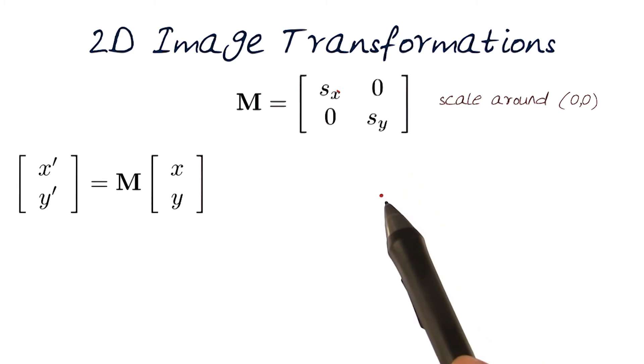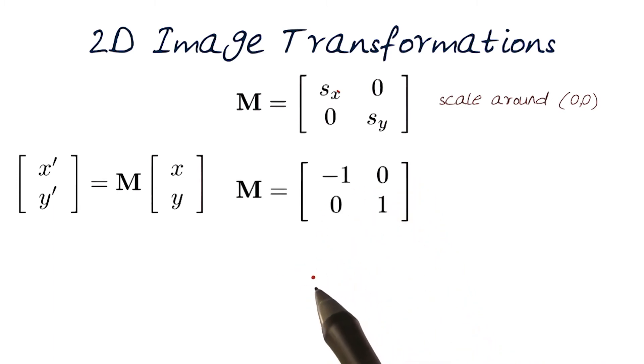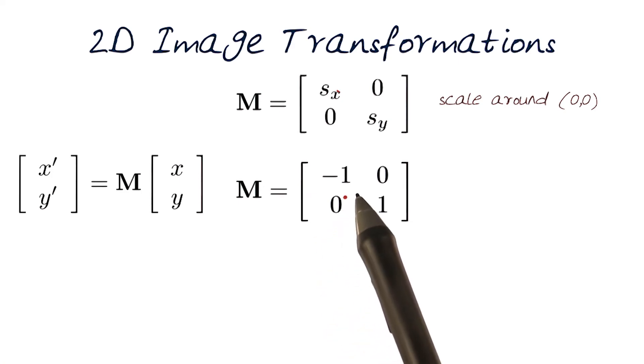There would be a linear scaling in that direction. Here is an interesting transformation, m matrix. What would happen when I apply this? Basically what it's going to do is flip the image in one direction.